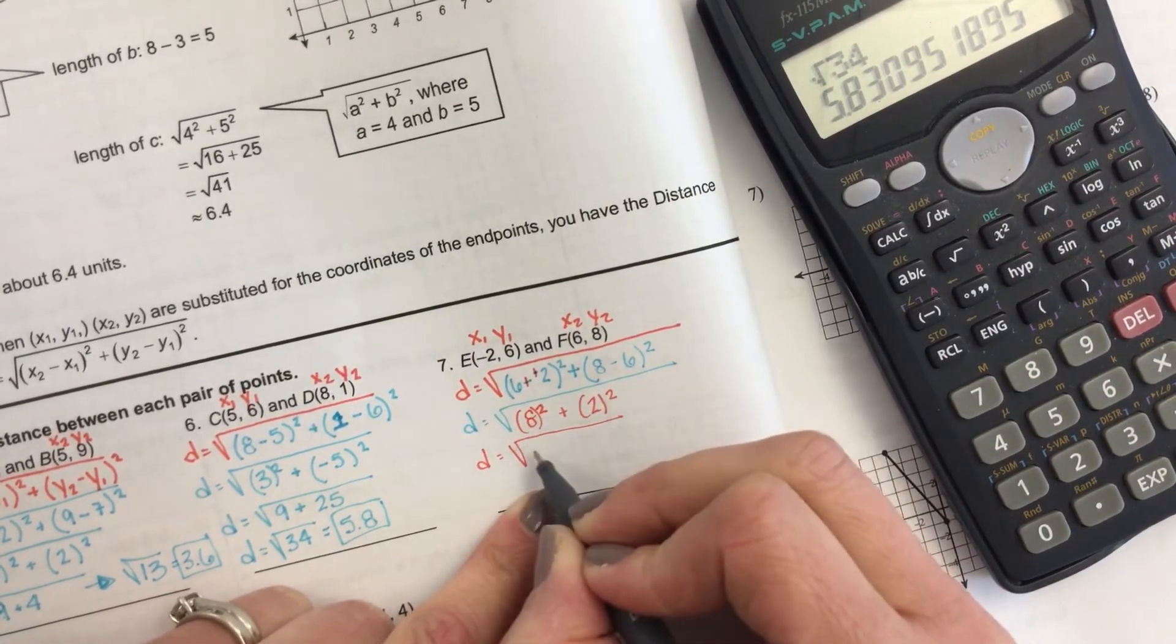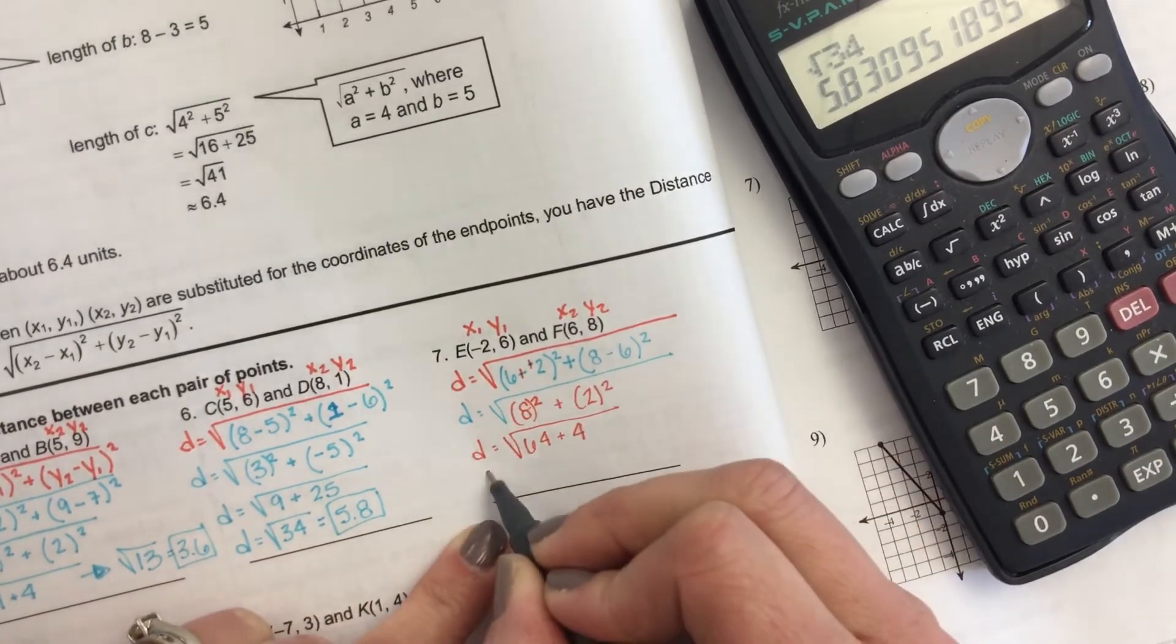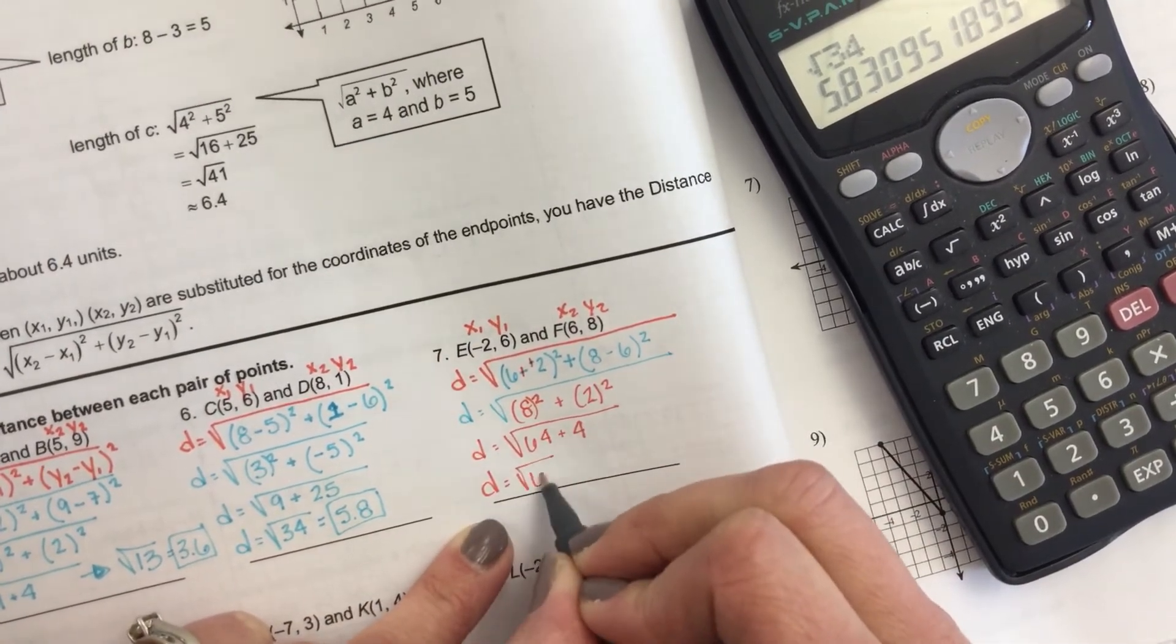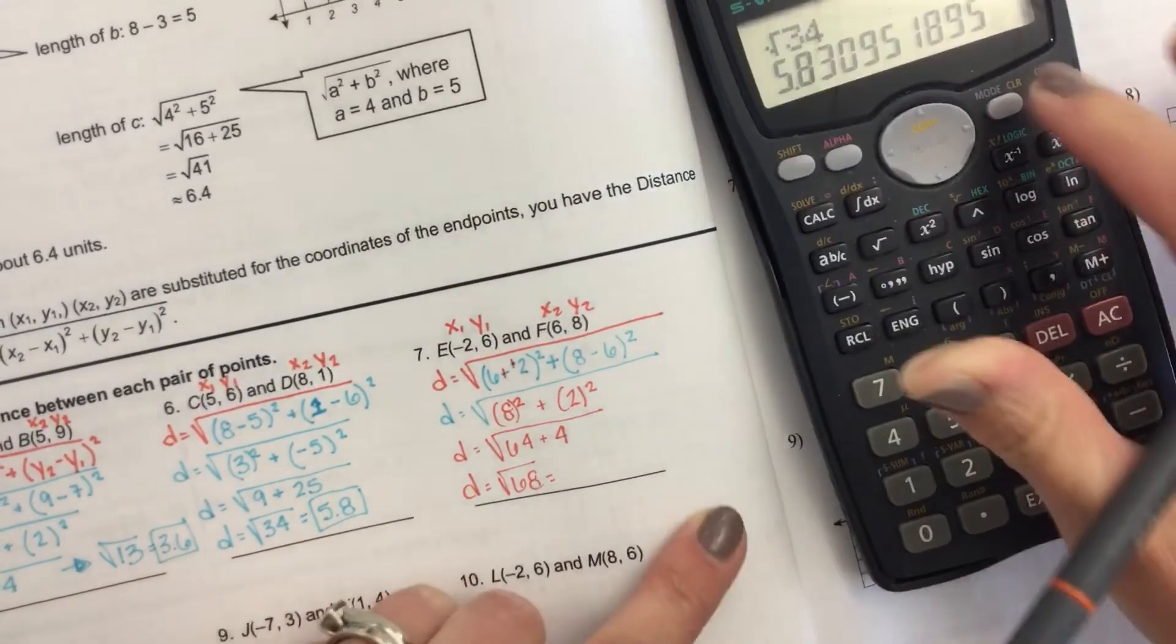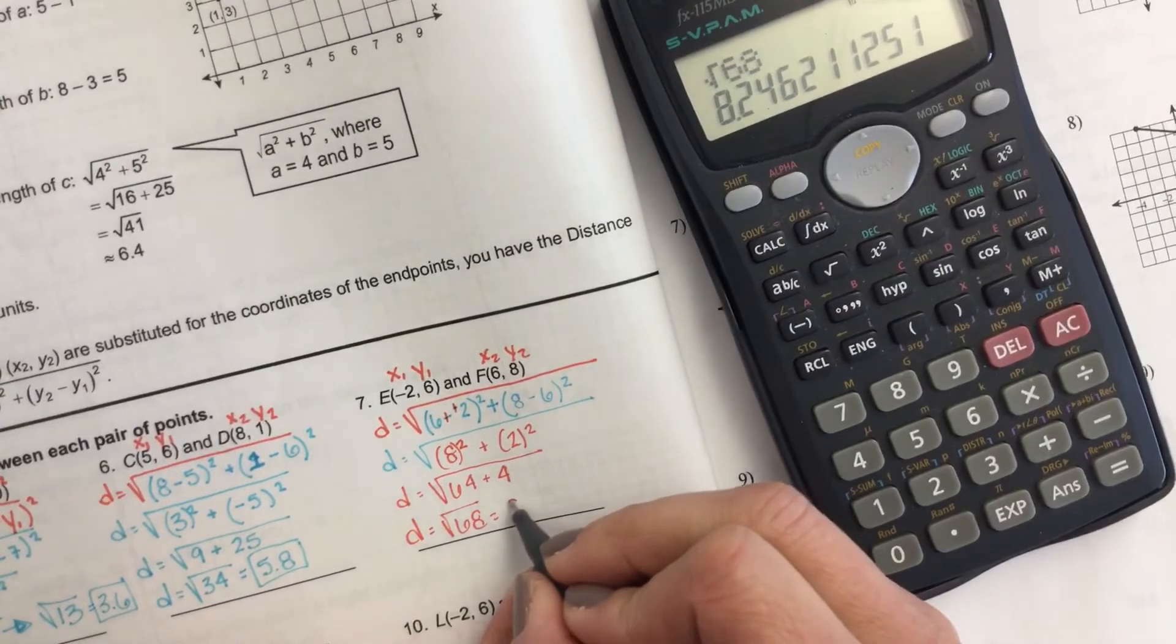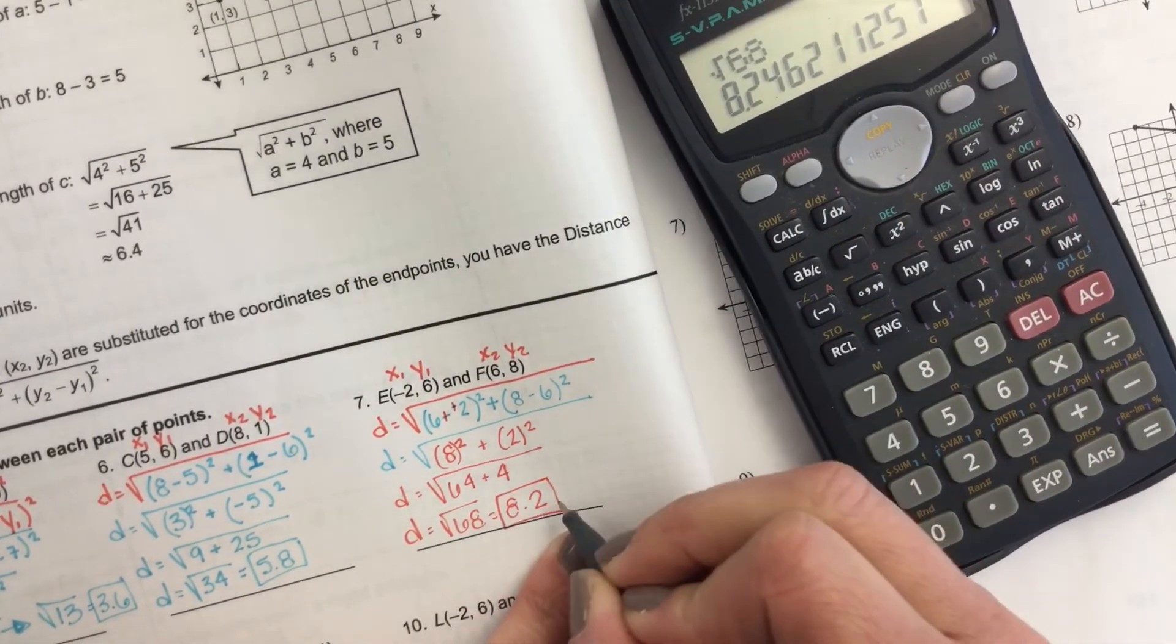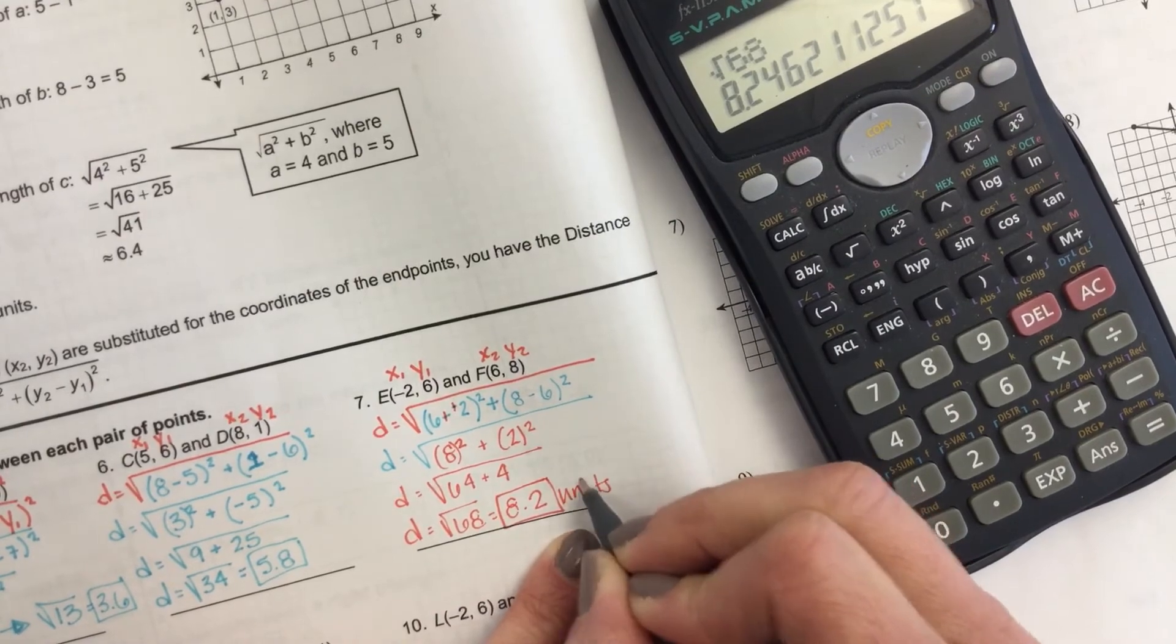8 squared is 64. 2 squared is just 4. So this is the square root of 68. And then if we square root 68, you get 8.2. And if we're going to label this, we would call it units.